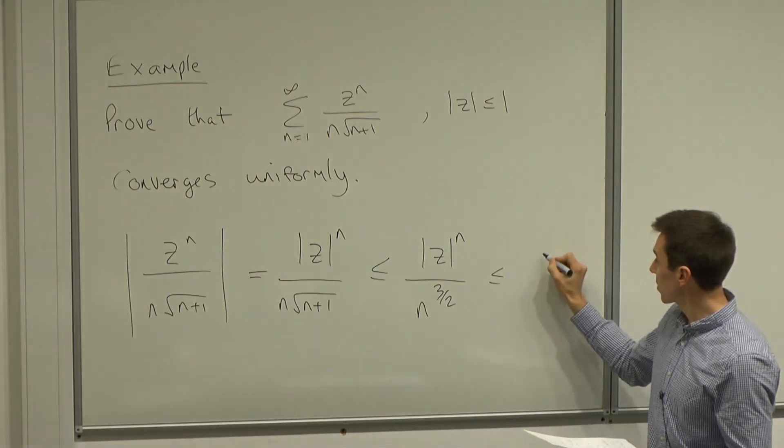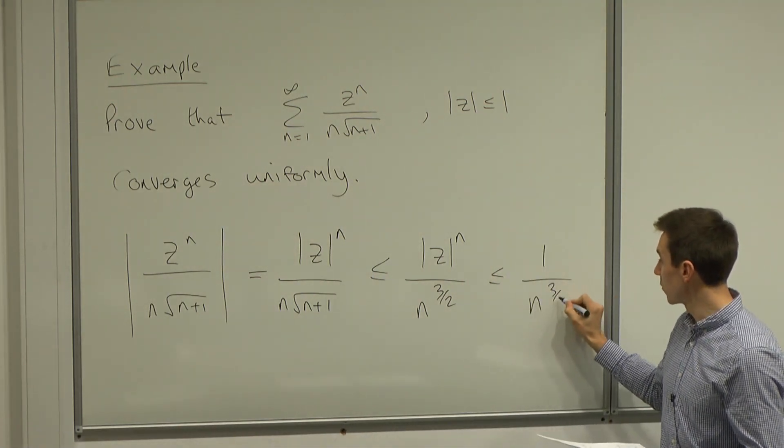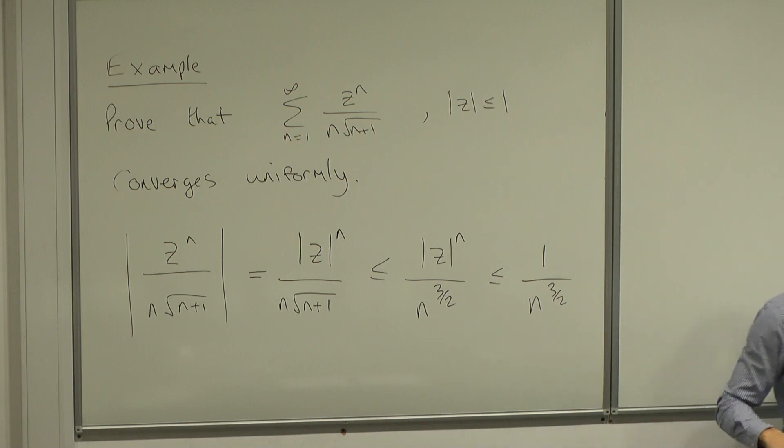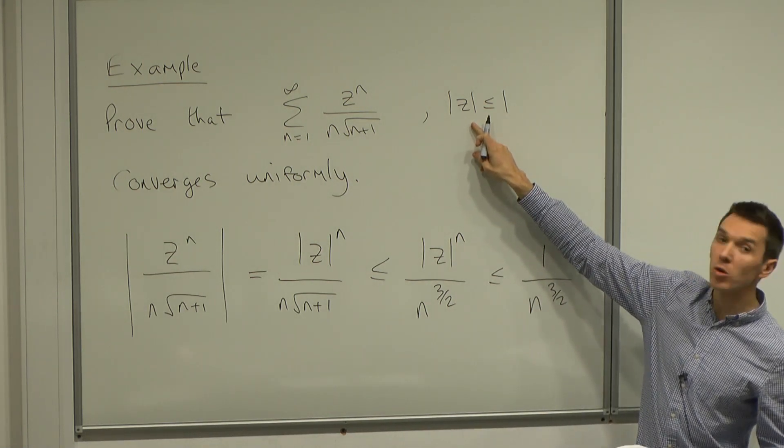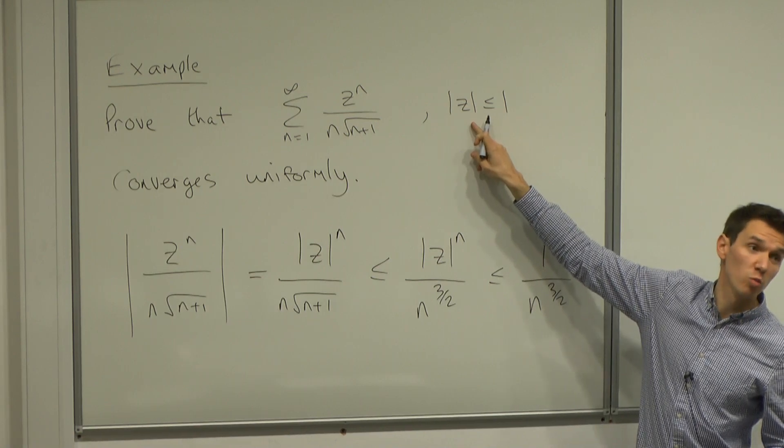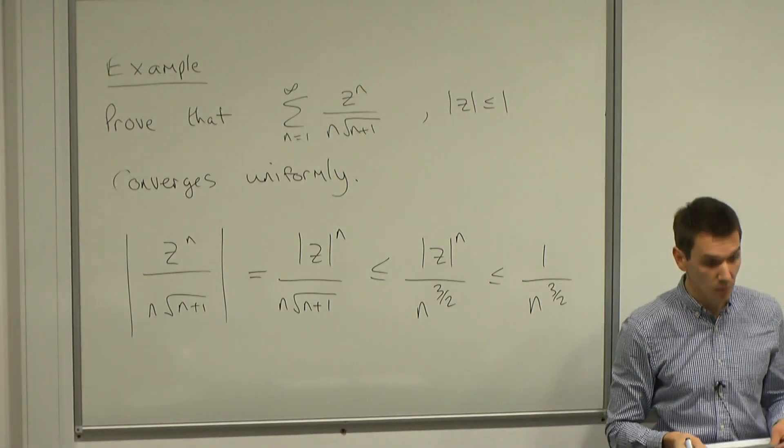And this is less than or equal to 1 over n to the power of 3 over 2. Why is this? Well, if we look at the question, we're told that the modulus of z is less than or equal to 1, so we can make this estimate here.